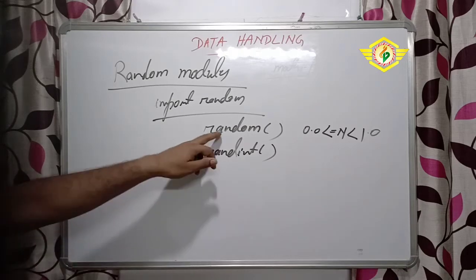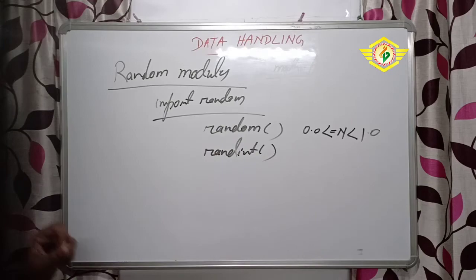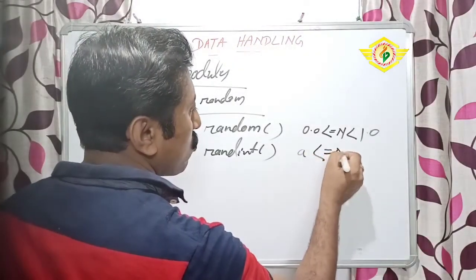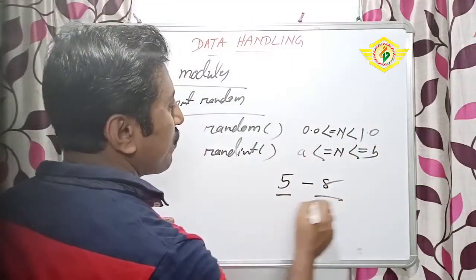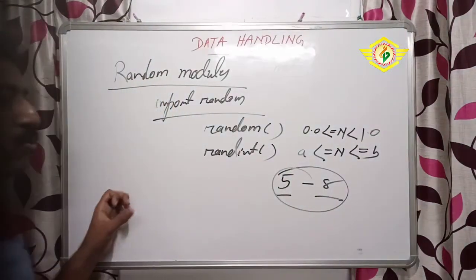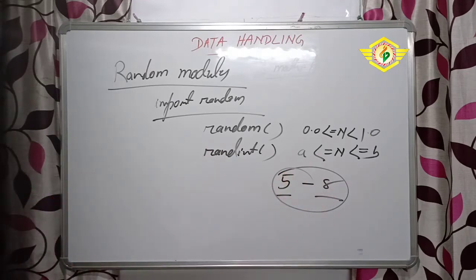But if we use randint(), that is a less than or equal to n and less than or equal to b. That means if I am taking 5 to 8, the value will come in between 5 and 8 including 5 and 8. Any number may be generated - it may be 5, it may be 6 or it may be 8. In this way we can just use it.